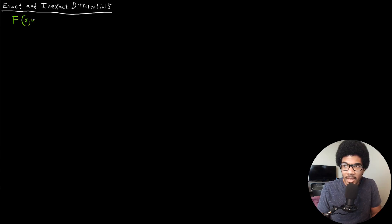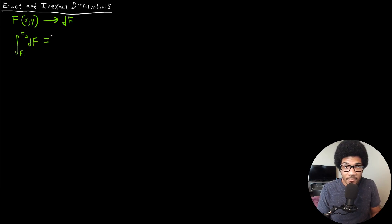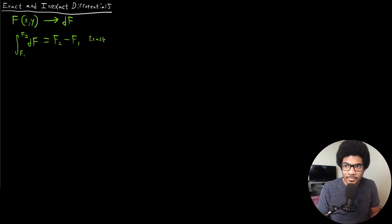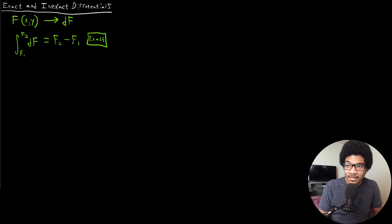Let's consider that we have some function f, that's a function of x and y. If we were to integrate over the total differential df from some initial f1 to some final f2, and this integral is equal to the difference between f2 and f1, this is what we call an exact differential. If this integral of the total differential only depends on the limits of integration, then that means this is an exact differential.